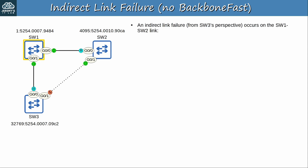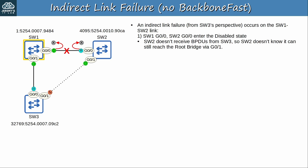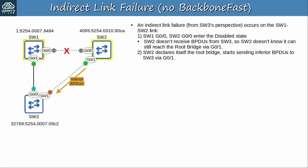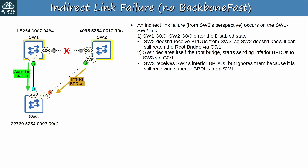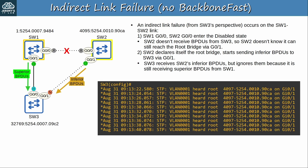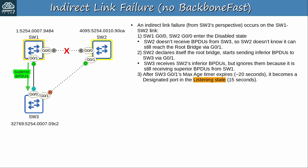An indirect link failure — indirect from SW3's perspective — occurs on the SW1–SW2 link. SW1 and SW2's G0/0 interfaces enter the disabled state, so SW2 has lost its path to the root bridge. SW2 doesn't receive BPDUs from SW3, because SW3 G0/1 is non-designated and therefore doesn't forward BPDUs from SW1 to SW2. So SW2 doesn't know that it can still reach the root bridge via G0/1. As a result, SW2 declares itself the root bridge and starts sending inferior BPDUs to SW3 via G0/1.